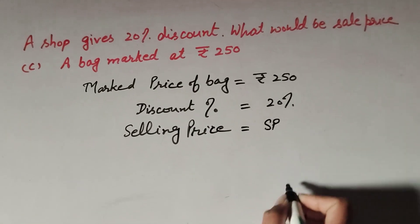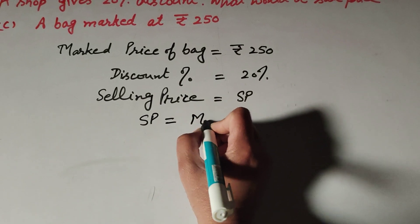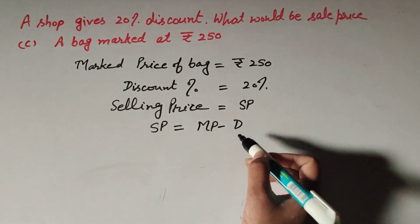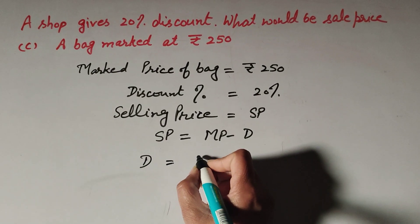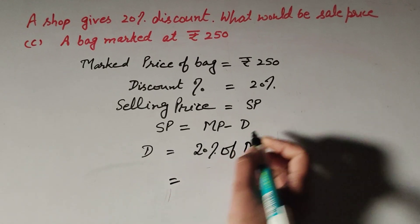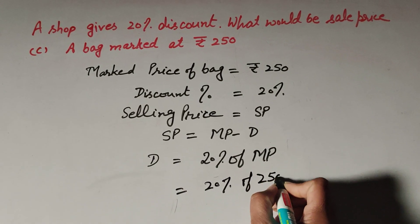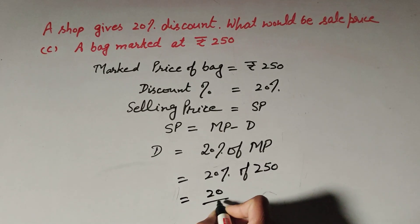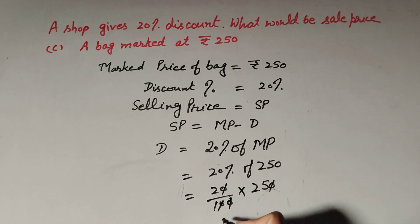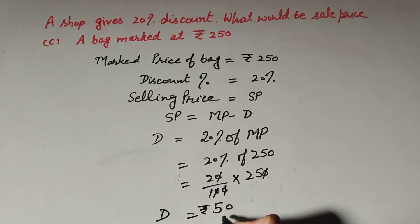Let SP be the selling price. The formula is: selling price equals marked price minus discount. To find selling price we need discount first. Discount equals 20 percent of marked price, which is 20 percent of 250, so 20 over 100 multiplied by 250. The zeros cancel, giving 2 multiplied by 25, which equals rupees 50. So the discount on the bag is rupees 50.